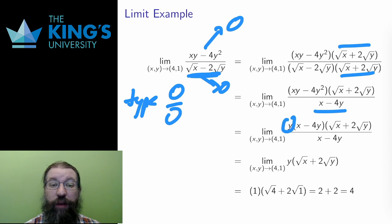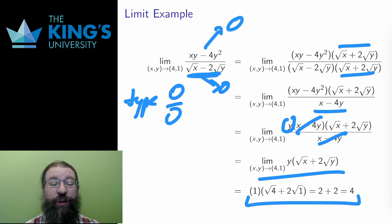Then I distribute the denominator and cancel out the square roots. At the same time, I factor y out of the numerator. Doing this leads to the same term in the numerator and denominator, which I can cancel off. And that leaves me with a continuous function, which I can evaluate to conclude that the limit is 4.